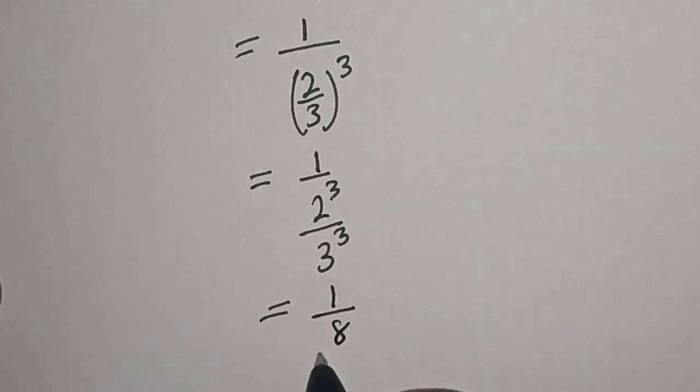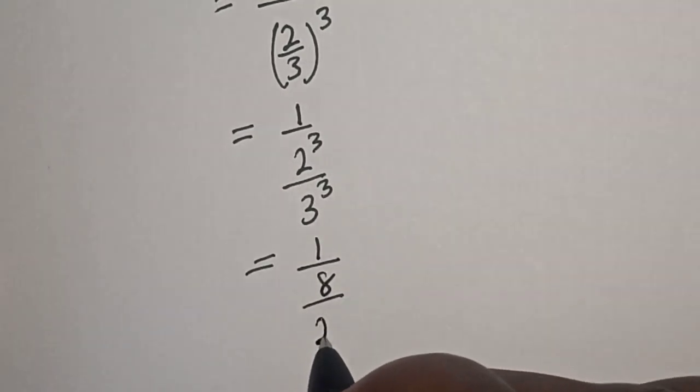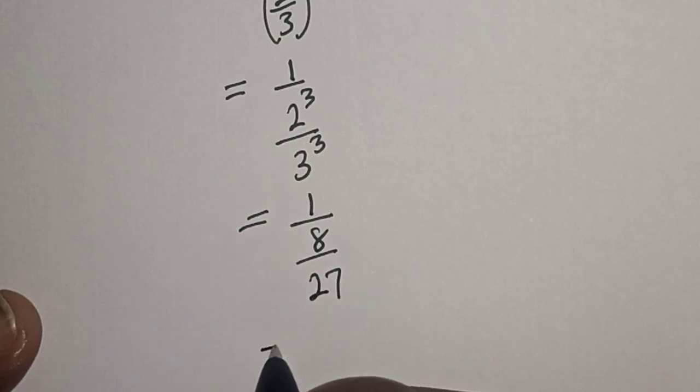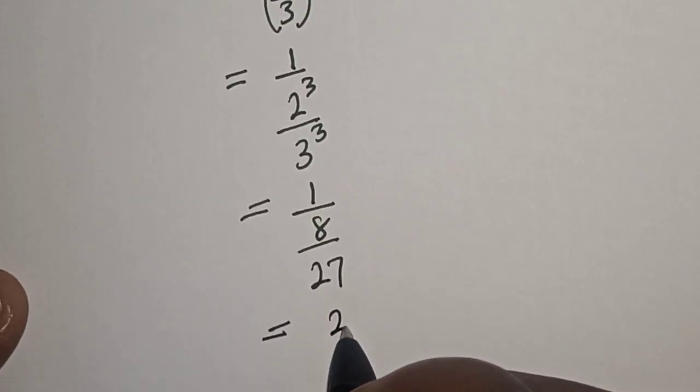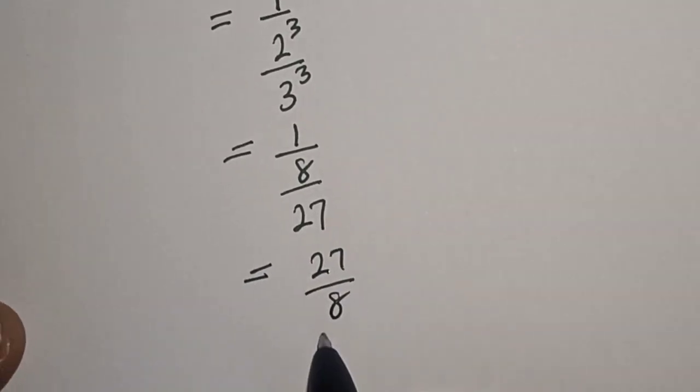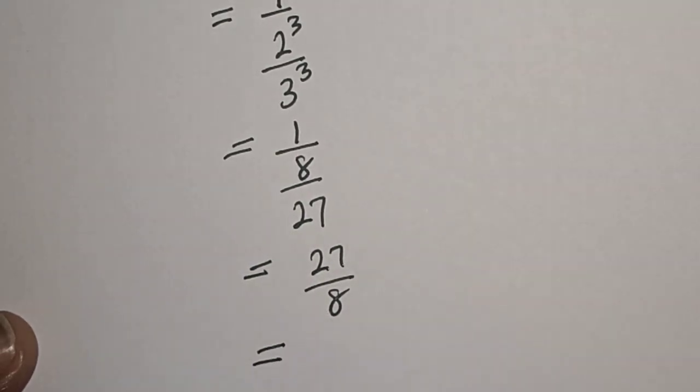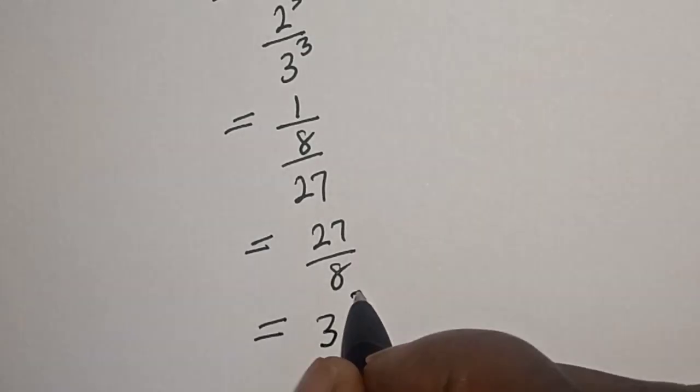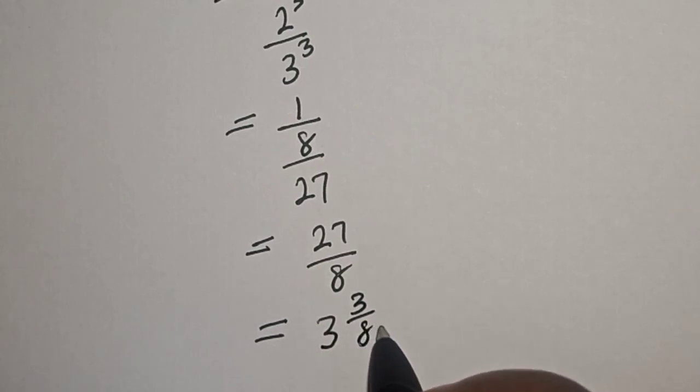Then this is equal to 1 over 8 over 27. And this is equal to 27 over 8. Then this is equal to 3 and 3 over 8.